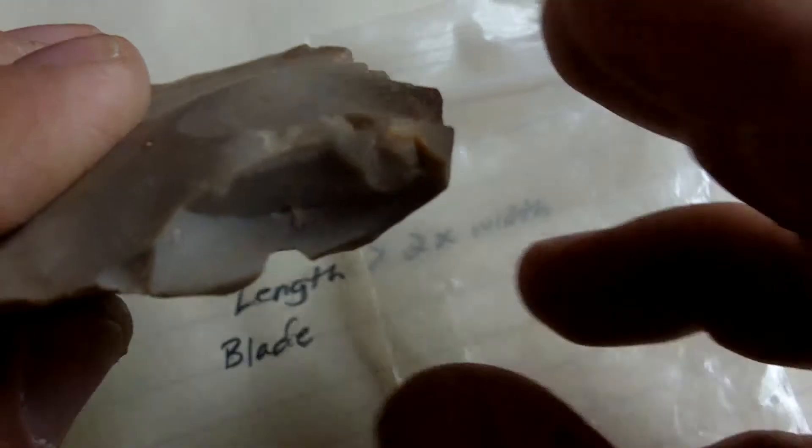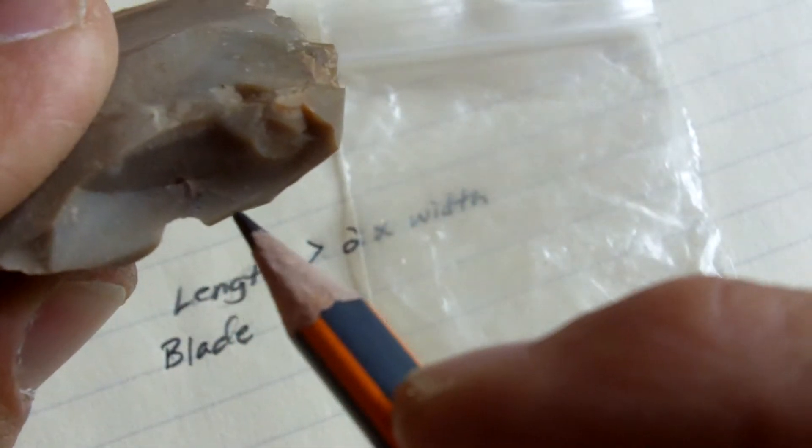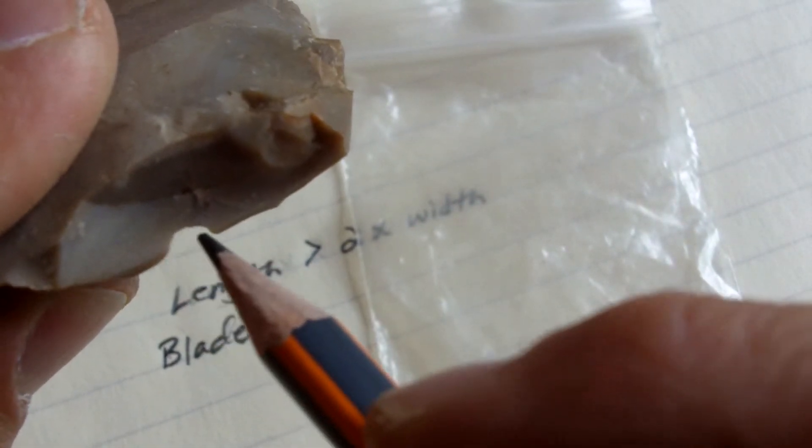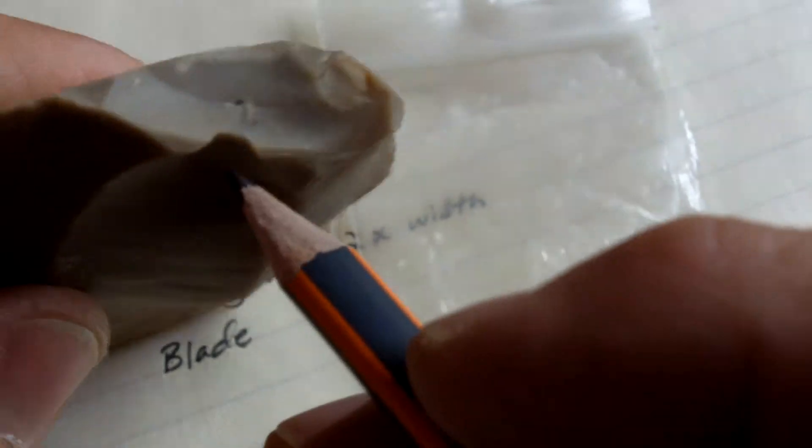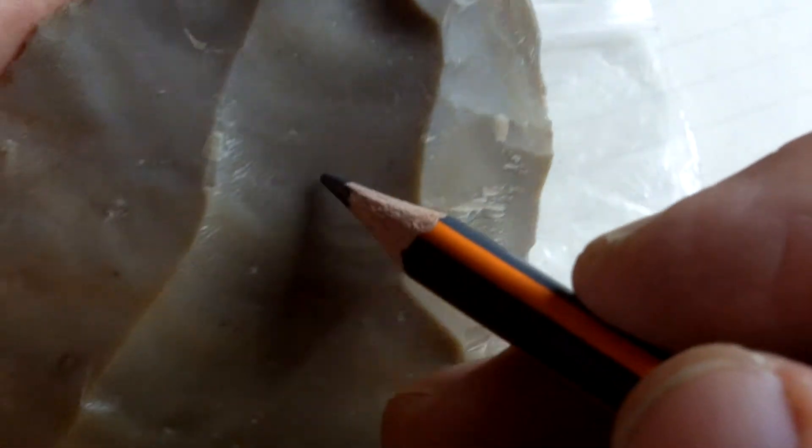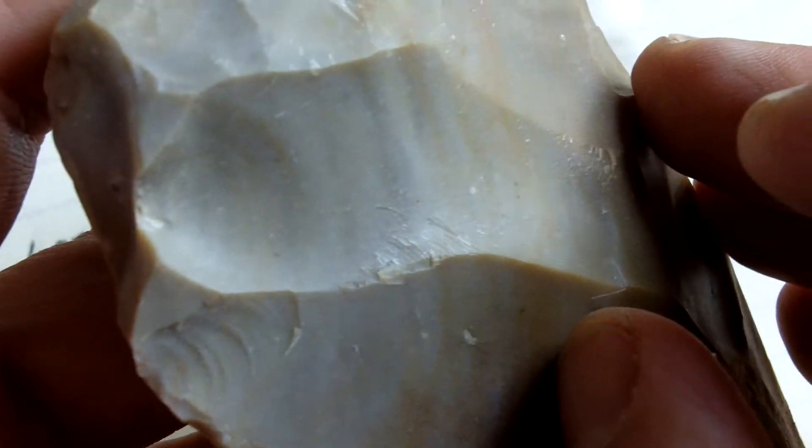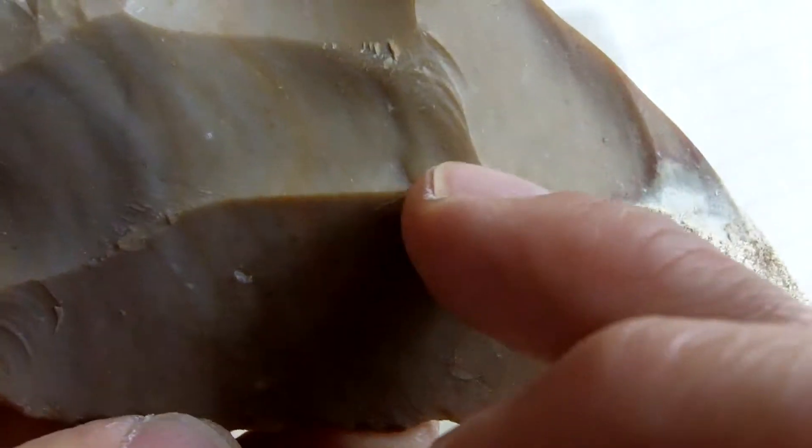But you can kind of see how large, or how big, of a bulb of percussion was needed to remove this. And this is really easy to flake material.